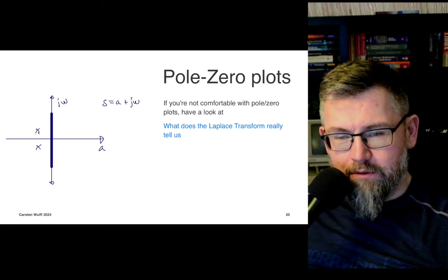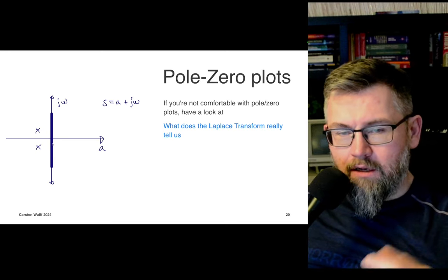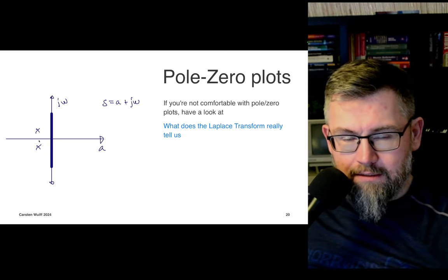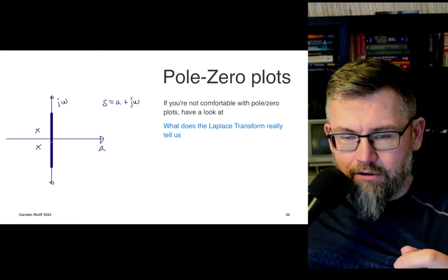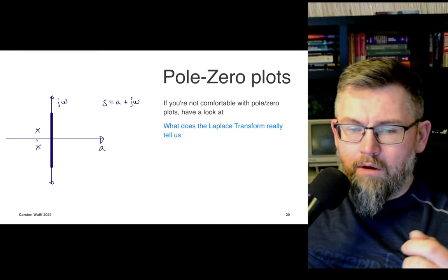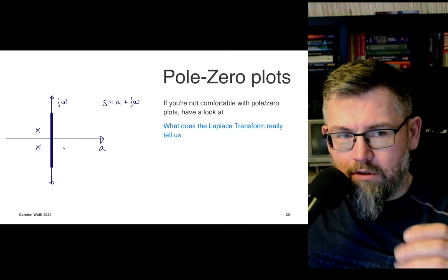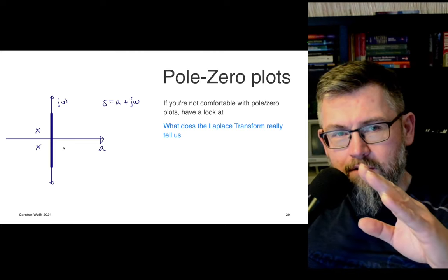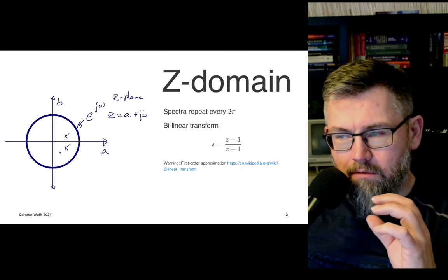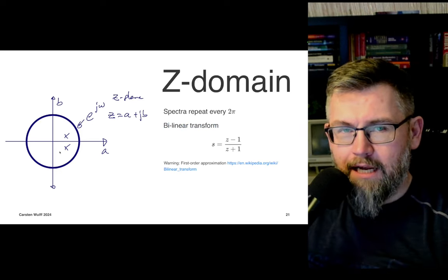If we have poles at the imaginary axis, we have a sustained oscillation scenario. If the σ value is negative, we get exponentially settling behavior. If poles are at positive σ values, oscillations increase towards infinity. In the Z domain it's slightly different — the spectra repeat every 2π, which is like wrapping everything into a circle. Instead of a pole-zero plane, we have the unit circle, e to the jω, with distance from zero of one.